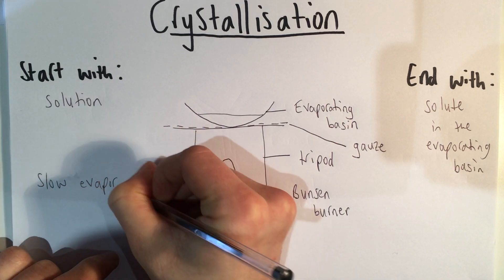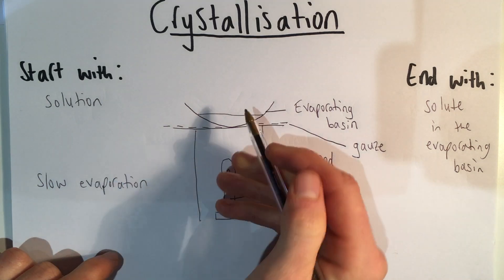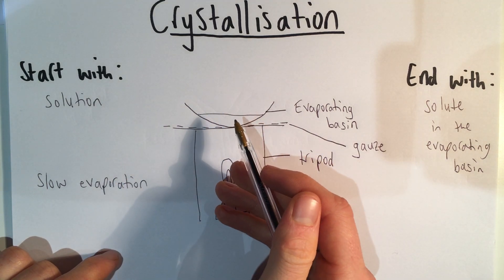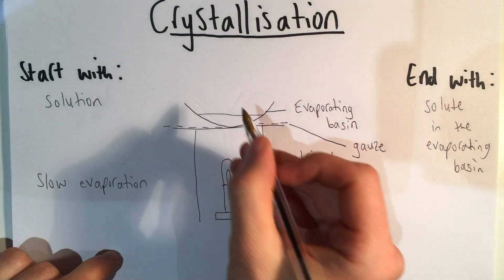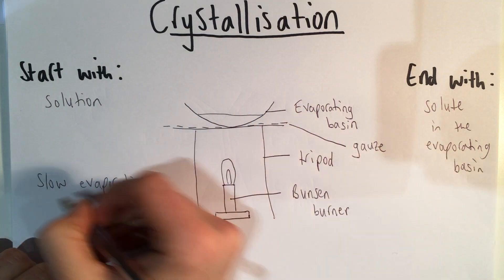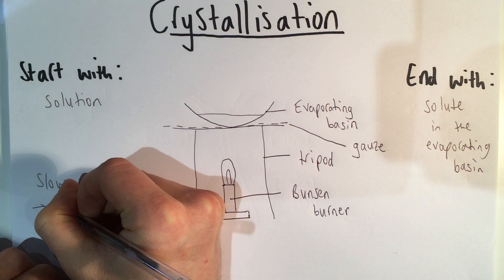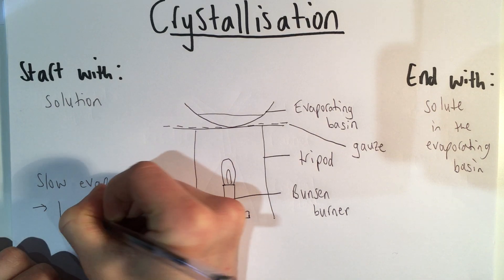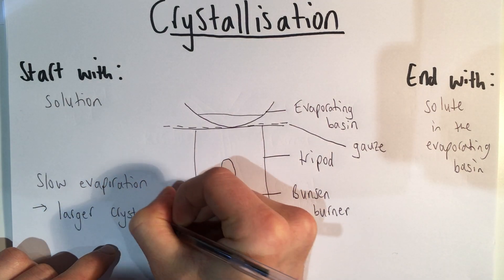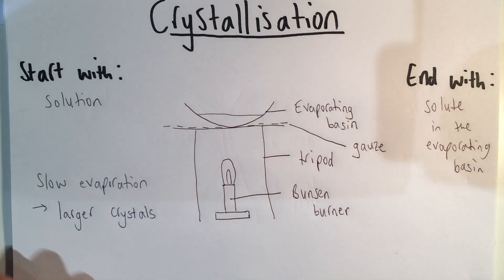So once we'd let half of that water boil, we would then turn off the Bunsen and leave the evaporating basin on the windowsill. That gives larger crystals of the solid. And that is crystallization.